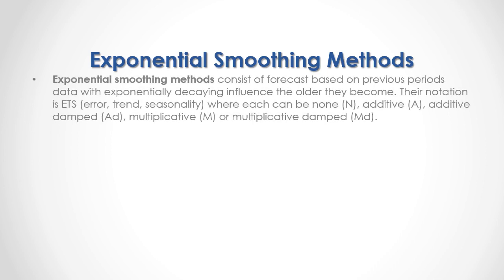Exponential smoothing methods consist of forecasts based on previous periods data with exponentially decaying influence the older they become. Their notation is ETS, which stands for Error, Trend, and Seasonality, where each can be none, additive, additive damped, multiplicative, or multiplicative damped.